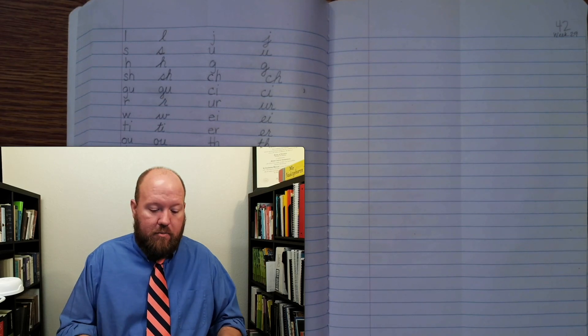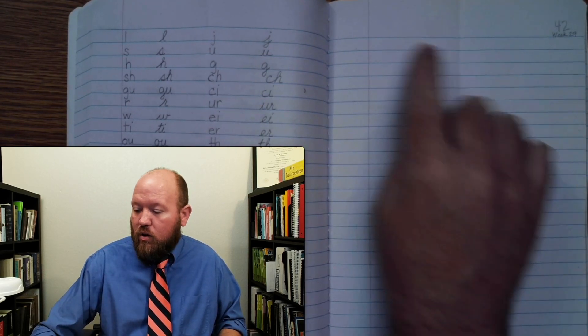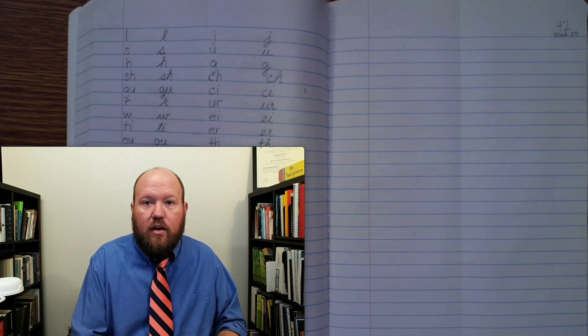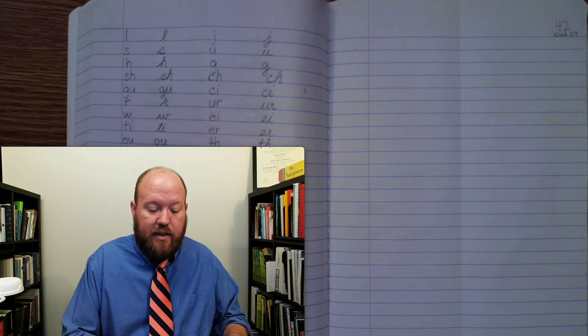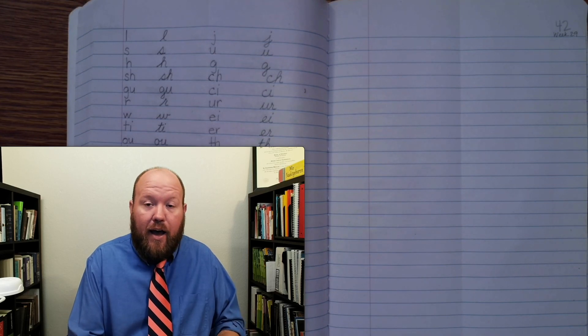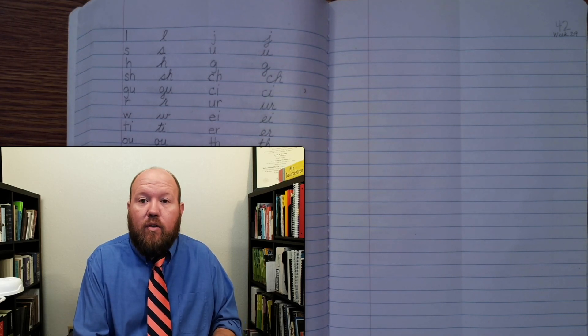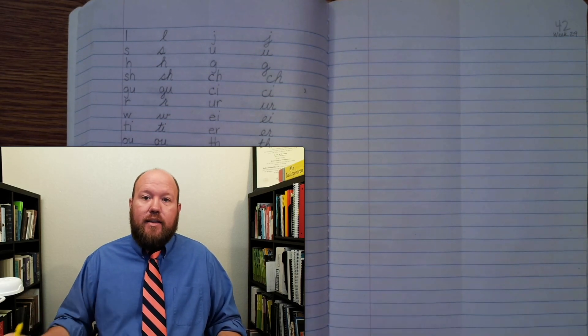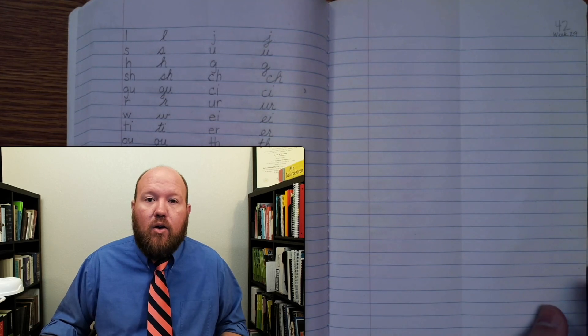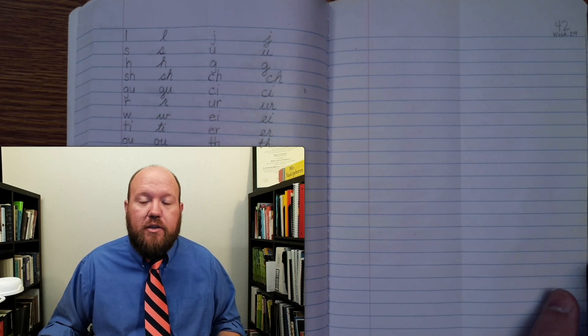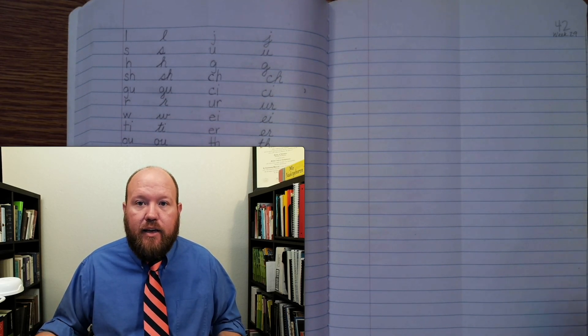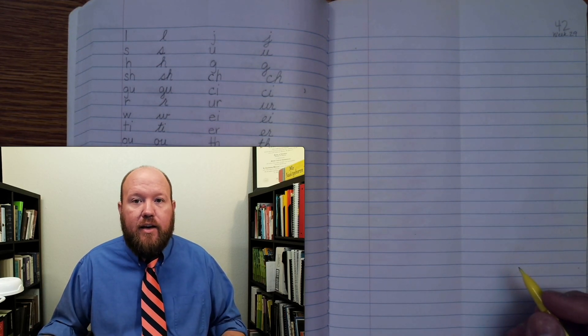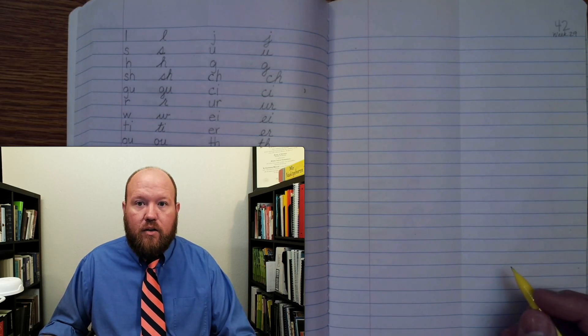Now we'll do the written phonogram review. So again, make sure you're in your book. We're going to use this third column right here. I will say the sound followed by the cue if there is one. You should say the sound and the cue if there is one, and write it. When you write it, write it without looking at what I write, write it from memory. If you get it wrong, that's okay. Just put a line through it and put the correct one beside it so you know which ones you need to spend extra time studying. I will write it twice: first in manuscript for first and second, and then in cursive for third through fifth.